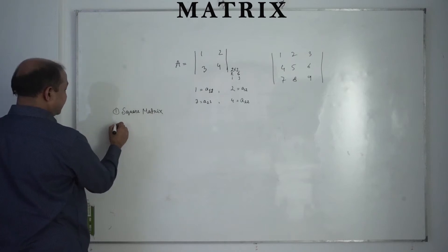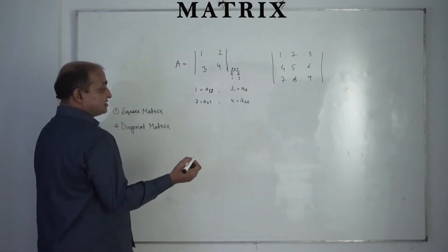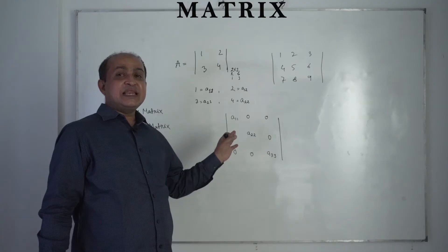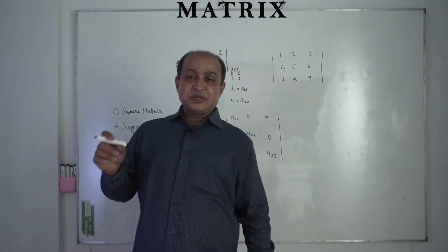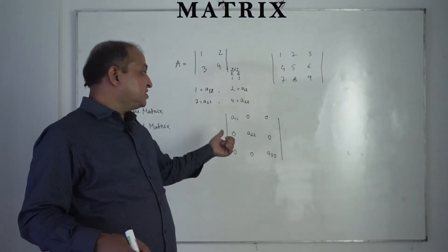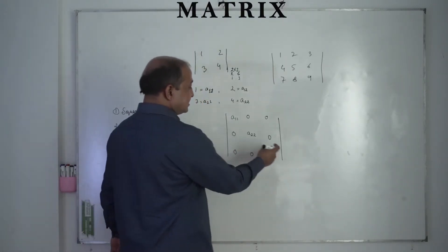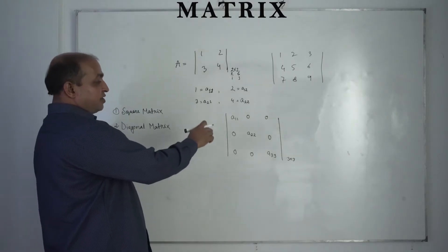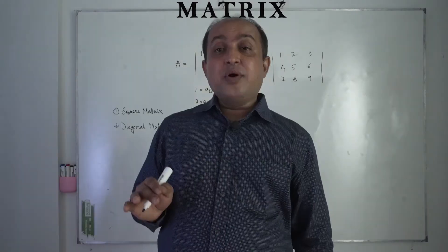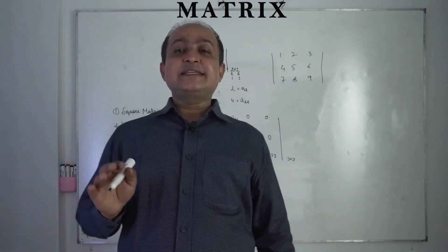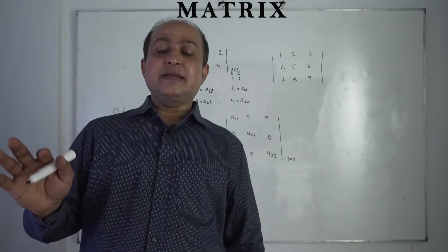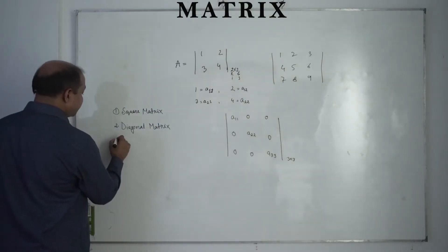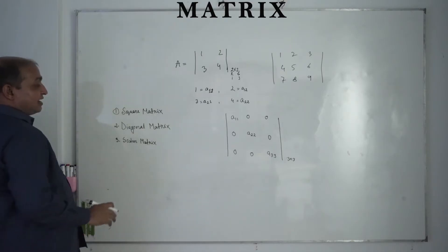The second type is the diagonal matrix. In a diagonal matrix, except for the diagonal elements, the rest of the elements are zero. It is a square matrix — for example, a 3×3 matrix where only the diagonal positions contain numerical data or any kind of objects, and all remaining elements are zero. That is the diagonal matrix.